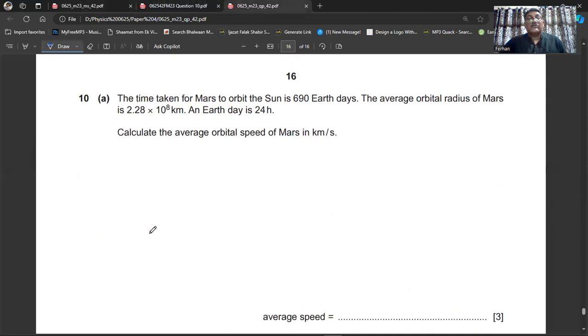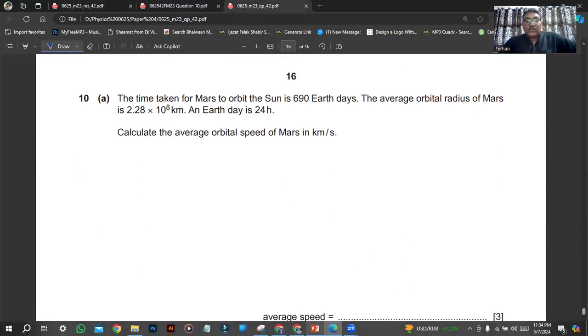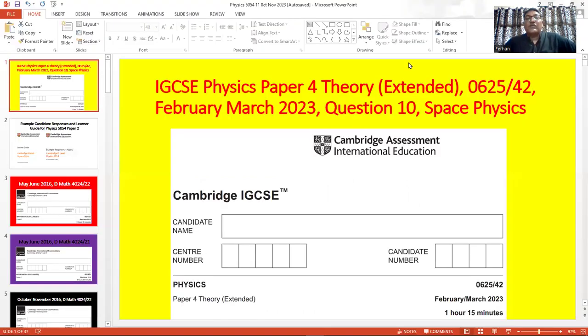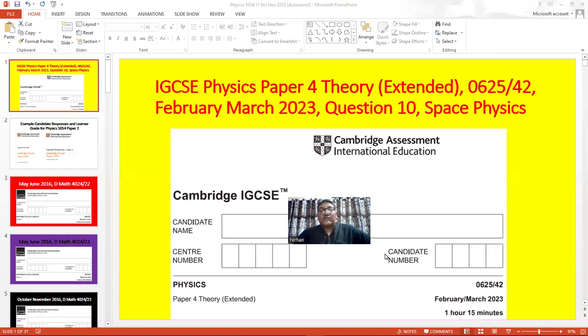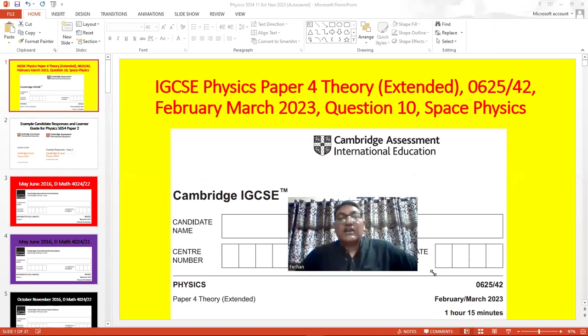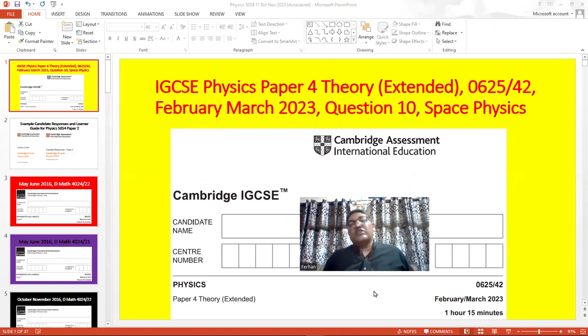This is that question. It was a total seven marks question and we have completed this question. The basic aim of doing this question is to provide questions related with space physics for our Cambridge O-level students because this is the new topic which is added into their syllabus and they don't have so many questions related with space physics. We are trying to provide these questions.